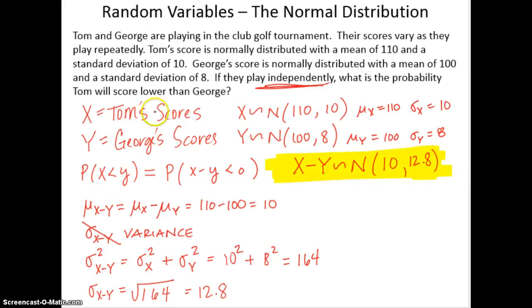So now we're looking for the probability that X minus Y is less than 0. And we know now that X minus Y is normally distributed with a mean of 10 and a standard deviation of 12.8, which makes this 22.8 and makes this negative 2.8. So 0 falls about right here. So we're looking for this area to the left, which is less than 0.